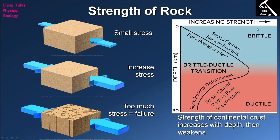The upper 10 kilometers or so of the Earth's crust are relatively cold from a geologic point of view. Because the rock is relatively cold, the lack of heat means it is less likely to deform in a plastic fashion, so if sufficient stress is applied it will behave in a brittle fashion — it will fracture and crack. As we head below about 10 kilometers, the amount of heat to which the rock is exposed begins to increase. The more heat the rock experiences, the more flexible the bonds in the minerals become, and the more likely the rock is to flow — to behave in a ductile fashion.